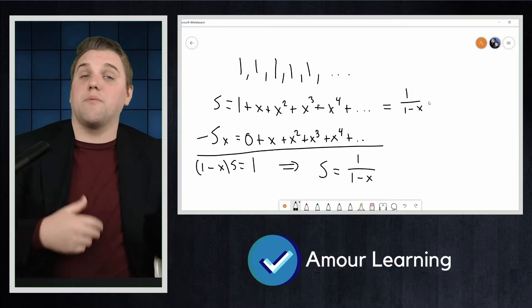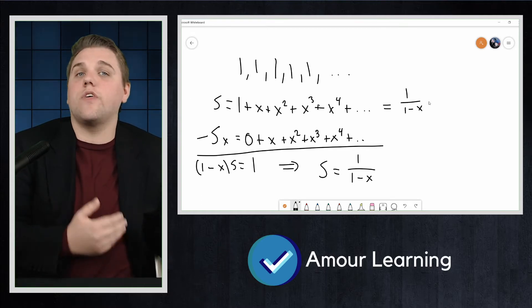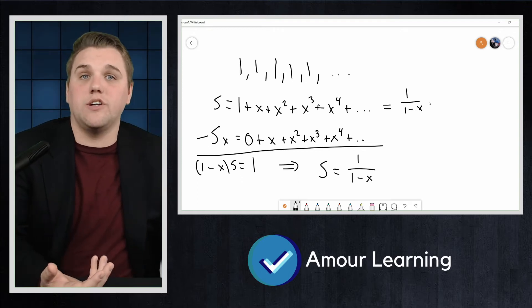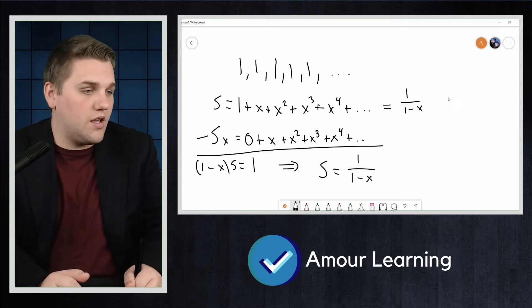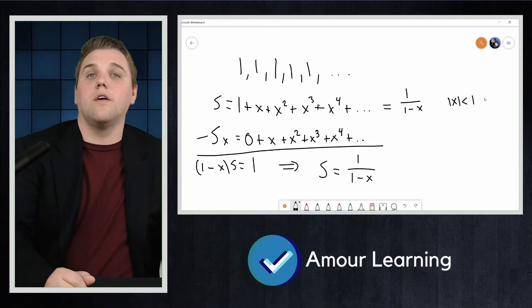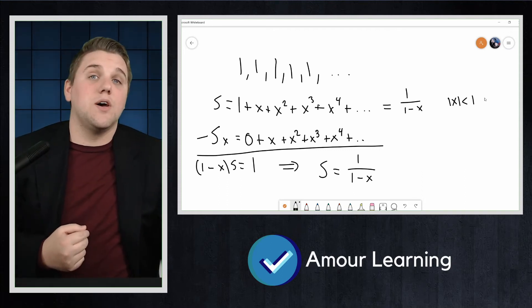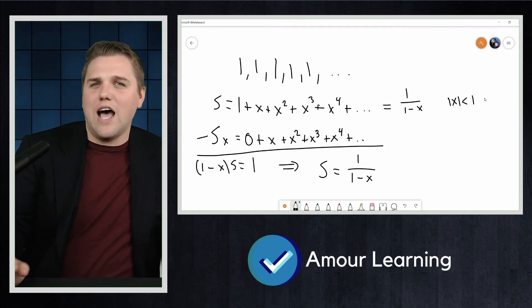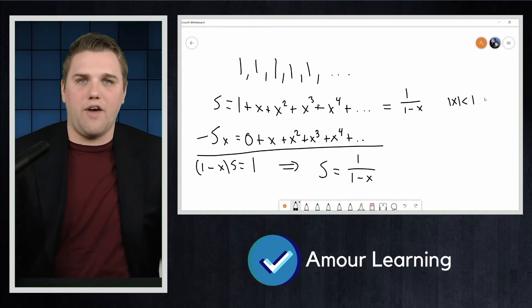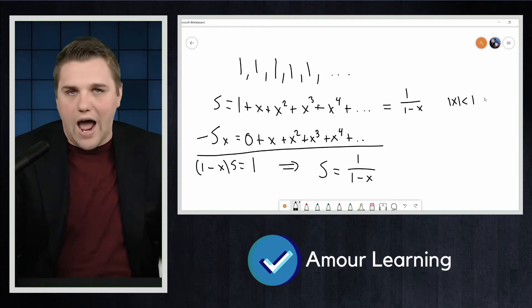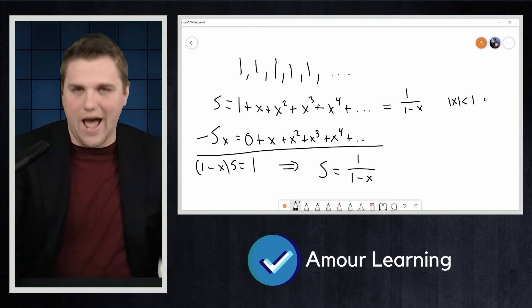You might remember from calculus that this is only true on the interval of convergence for the power series when the absolute value of x is strictly less than 1. That is true for us, but we don't care. We're never going to plug anything in for x. So as long as there is some value of x for which the generating function and generating series agree, we're happy.